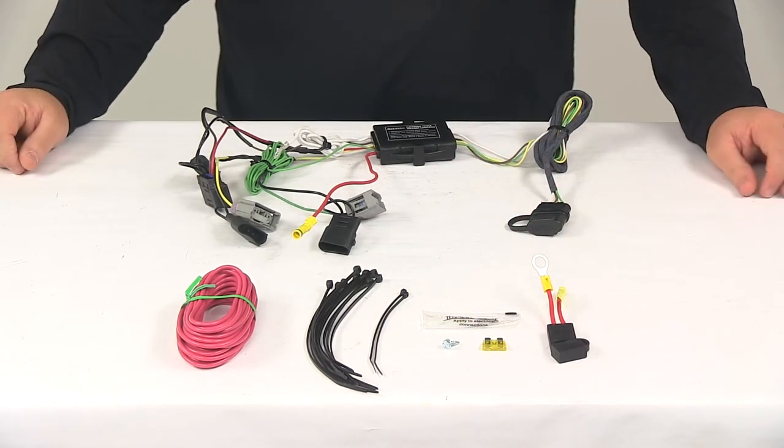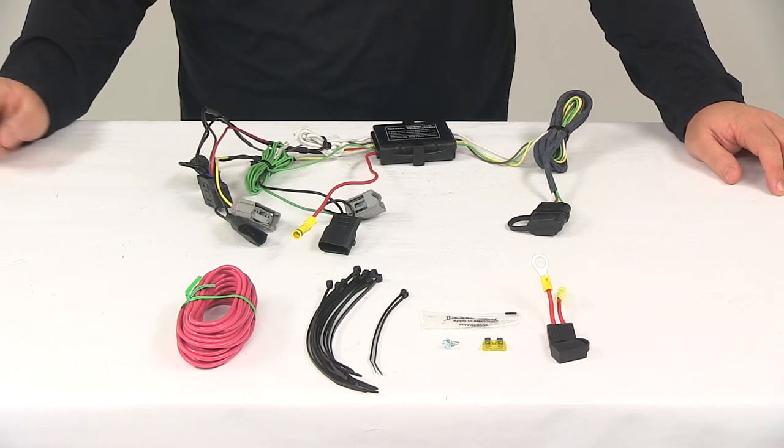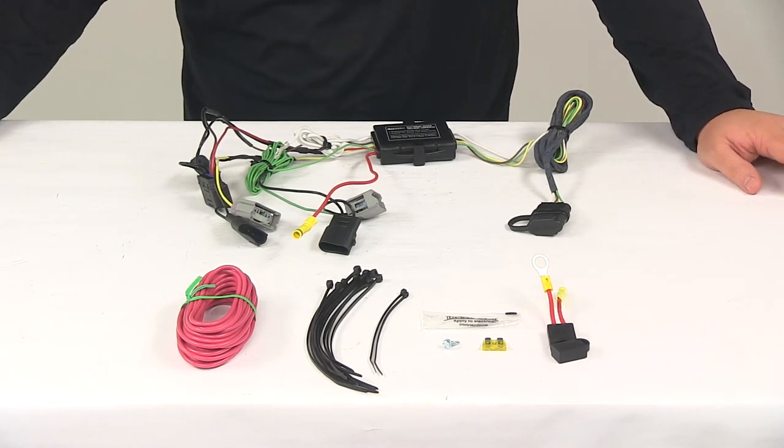When it comes to the maximum amperage for the stop and turn lights, we're looking at 4.2 amps per circuit. For the tail lights, it's 7.5 amps per circuit.